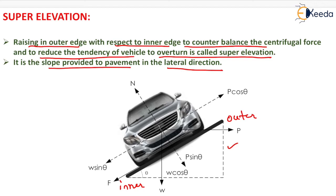Consider a road whose cross-section shows the outer edge and inner edge of the pavement. The outer edge is raised with respect to the inner edge by an angle theta, and a vehicle is moving along this curve. The centrifugal force P acts outward, and the weight W acts vertically downward. On resolving W, we get W cos theta and W sin theta as components.